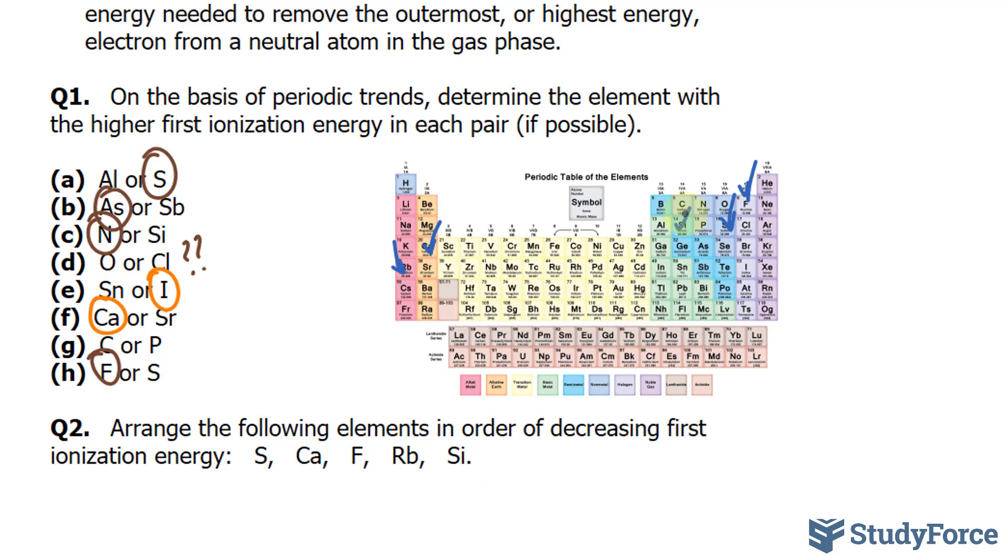Of course, fluorine will have the highest ionization energy because it's to the top right corner of the periodic table. So that's first. Second will be a battle between silicon and sulfur. Sulfur is to the right of silicon, so this one will be second.